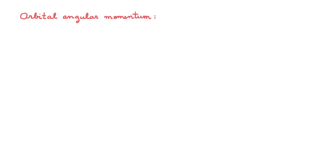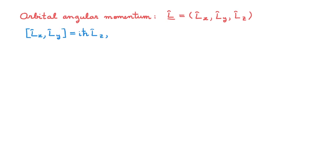So let's now turn to orbital angular momentum. Using the usual notation, we call the orbital angular momentum operator L, which is a vector operator made of three components LX, LY, and LZ. These three components obey the general angular momentum commutation relations, which look like this for LX and LY, like this for LY and LZ, and like this for LZ and LX.